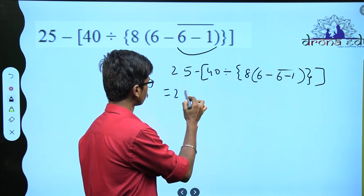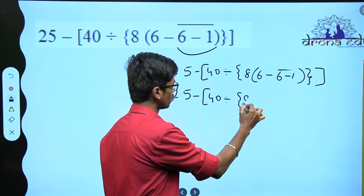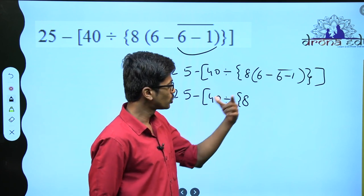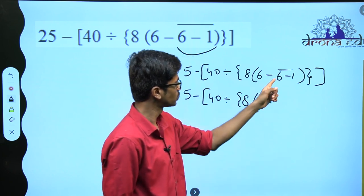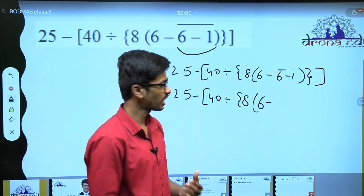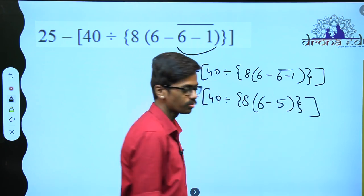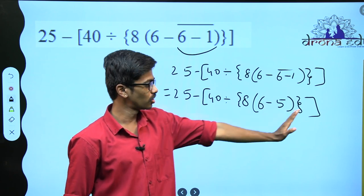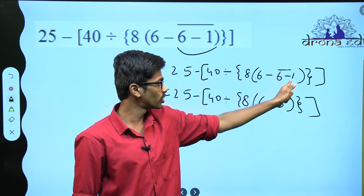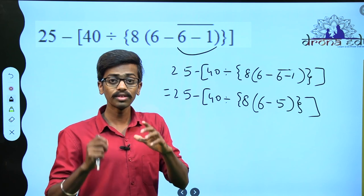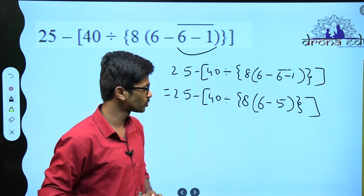Now we will do the next step. Write everything as it is without any changes, except one: to remove any bracket, you just have to solve what is under it. We have 6 minus 1, what is 6 minus 1? 5. I wrote 5 here and closed the bracket, closed the curly bracket, closed the square bracket. Whatever brackets I opened, I closed everything. Only what I solved inside this bracket came out as a single number — whenever inside the bracket you get a single number, you can take out the brackets and throw them. Brackets' work is over, so throw them.